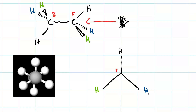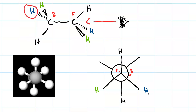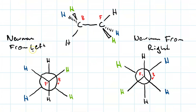So this is our front carbon. And now we'll draw the back carbon. Here's the one going straight down. The one that's going up and to the right is on a dash. The one going up and to the left is on a wedge. So compare these two Newman projections — the one from the left and the one from the right.